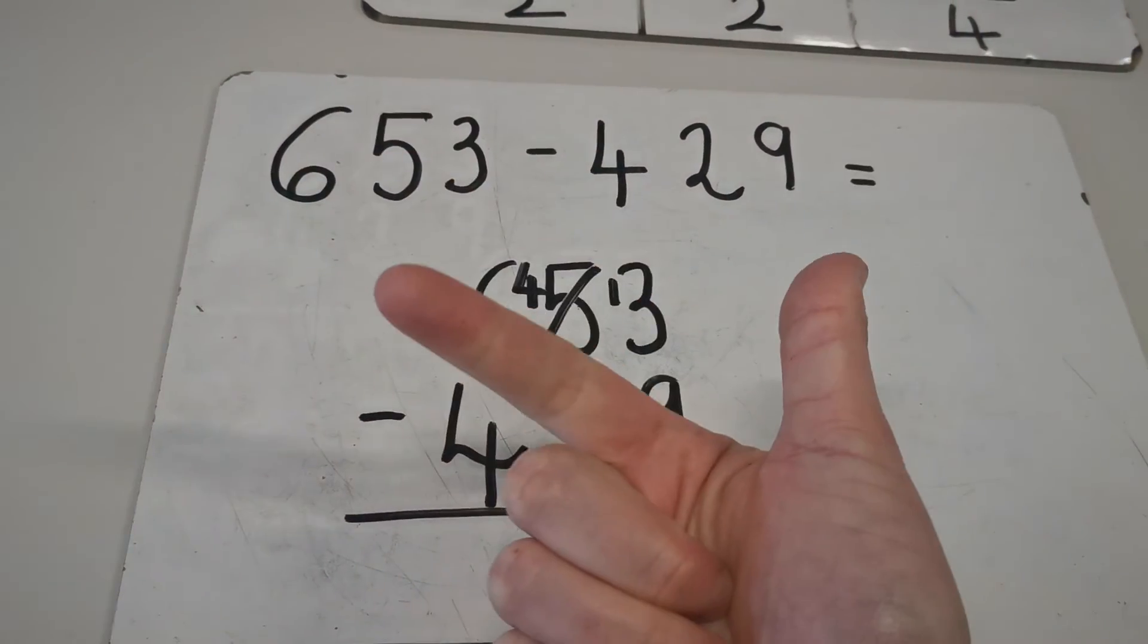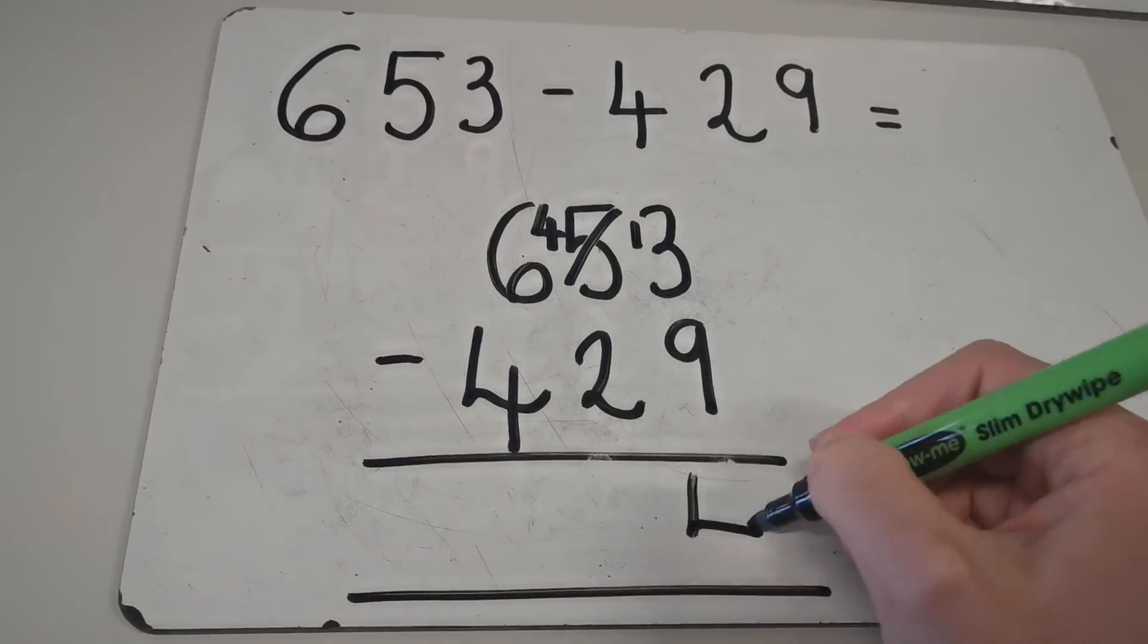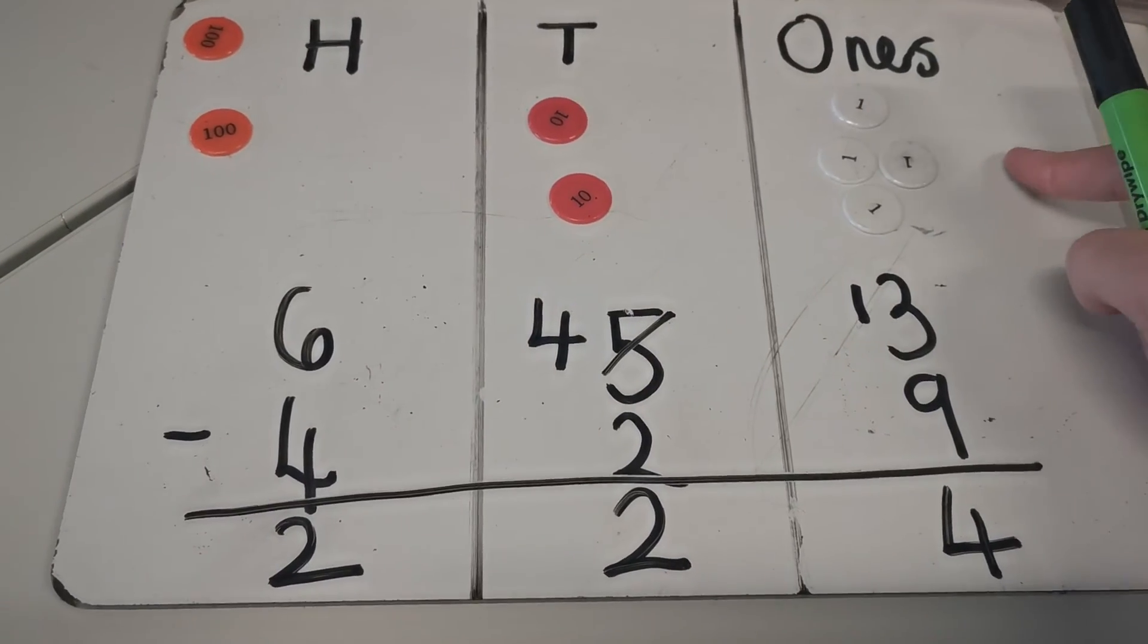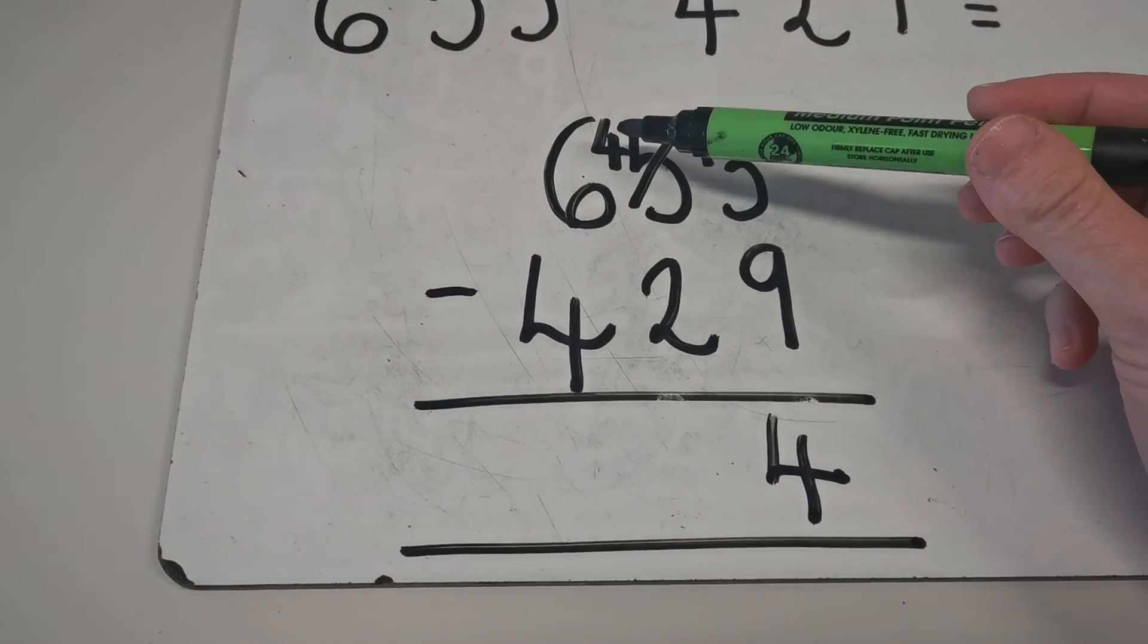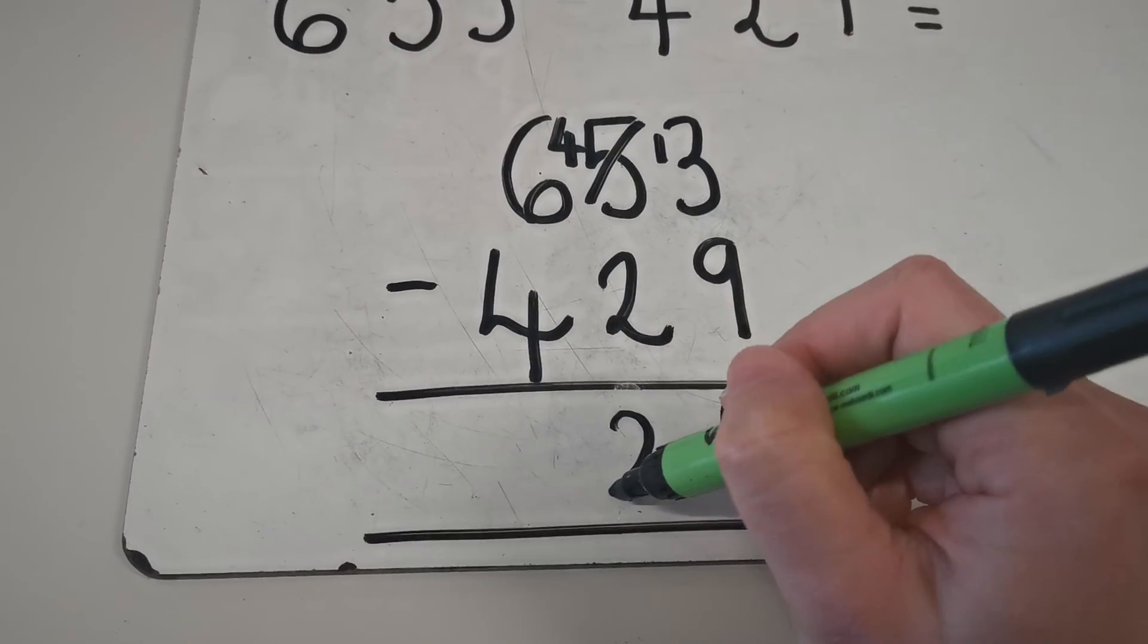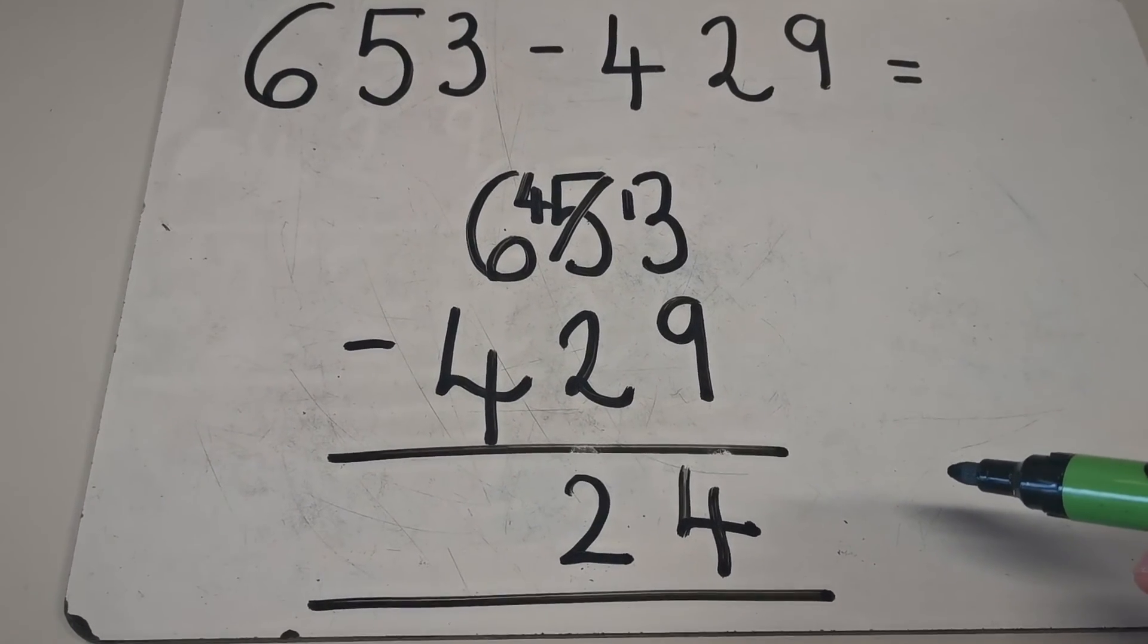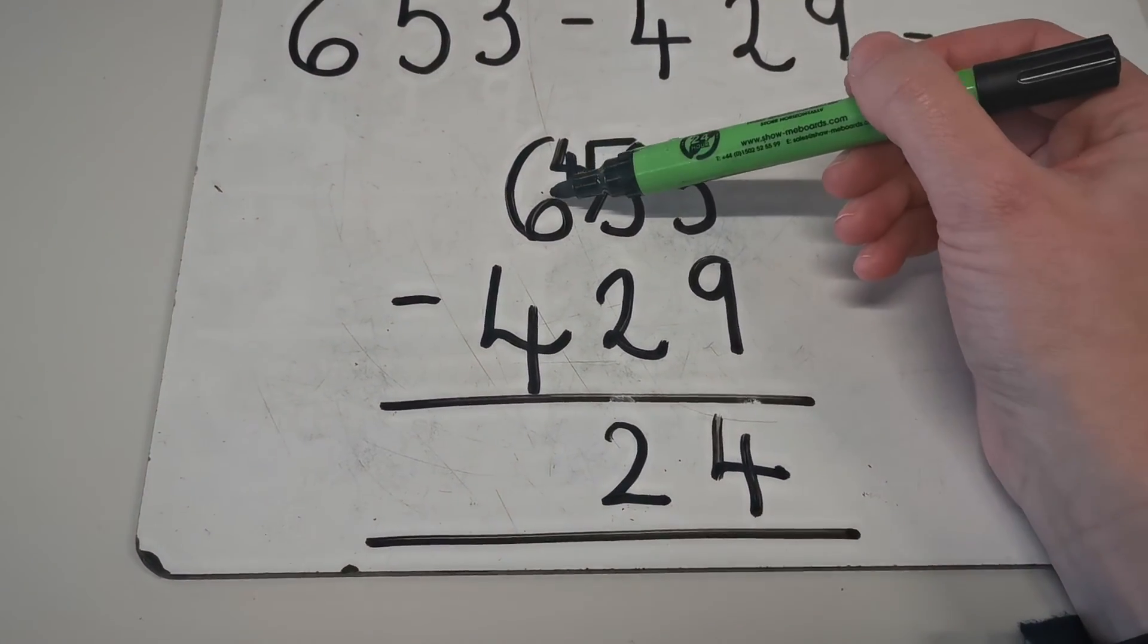So 10, 11, 12, 13. As you can see, I've got 4 ones just like I had up here in my place value chart. I had 4 ones and I've got 4 ones again. So then I've got 40 subtract 20, which is 20. I know that 4 subtract 2 is 2, so 40 subtract 20 is 20.